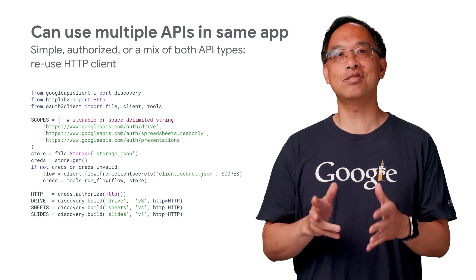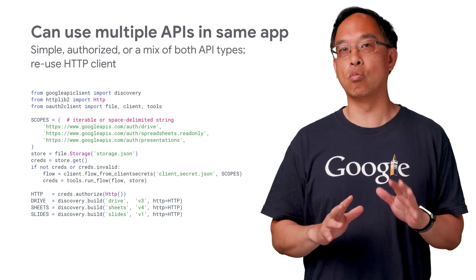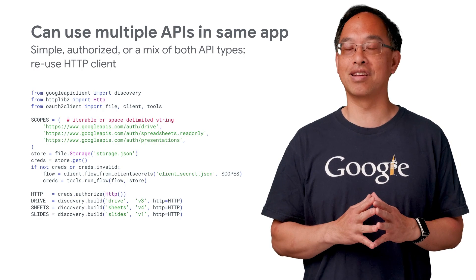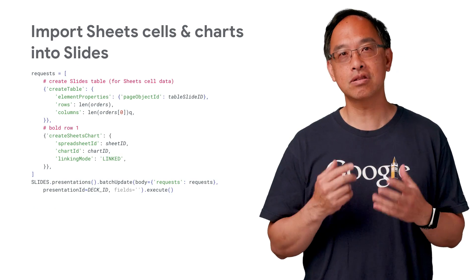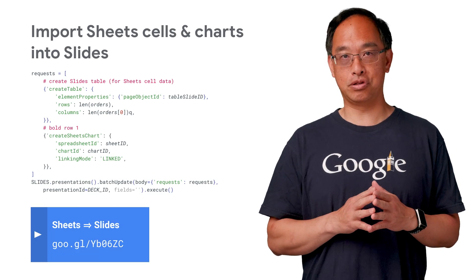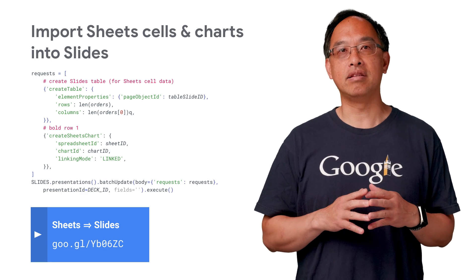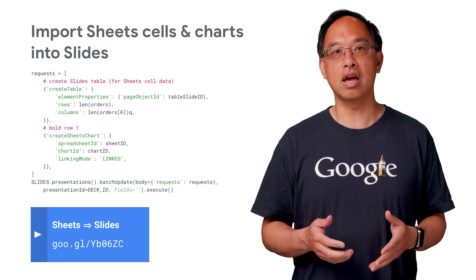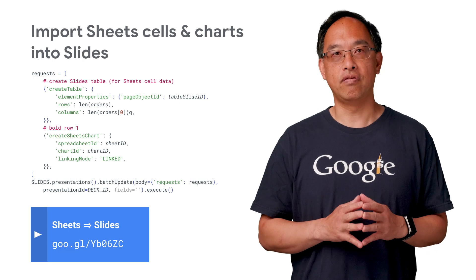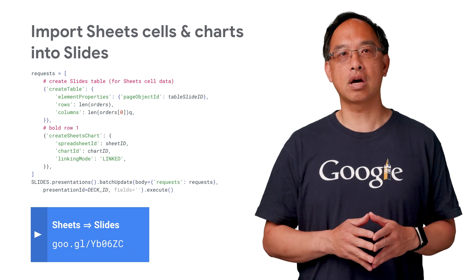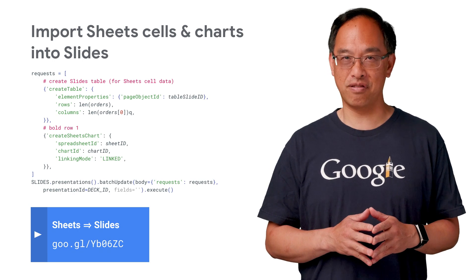This pseudocode answers the obvious question of how to set up using more than one API at a time. Here's another example using two APIs: we take data and a chart from a spreadsheet and add them to a slide deck. The video also shows how to read the data from the Sheets API first.